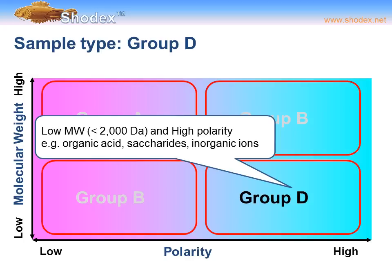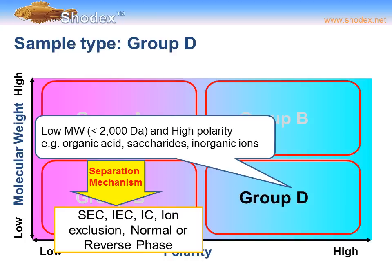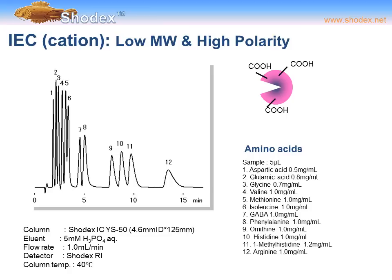This brings us to our final group in the molecular weight versus polarity diagram: group D. These are low molecular weight, high polarity compounds, including organic acids, inorganic ions, and saccharides. The separation mechanism can be SEC, IEC, IC, ion exclusion, or normal or reverse phase. In other words, these compounds are the most diverse and can be separated using the widest variety of columns and separation modes.